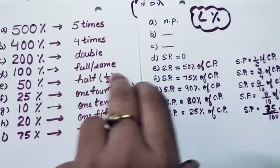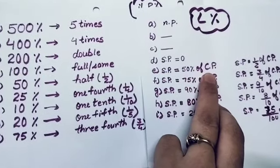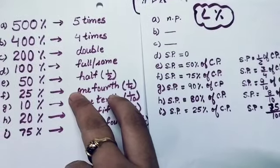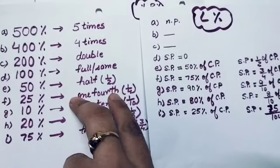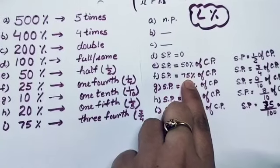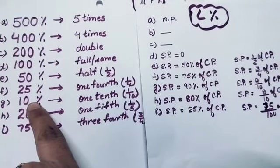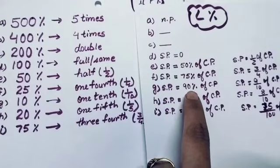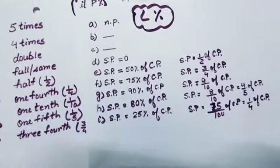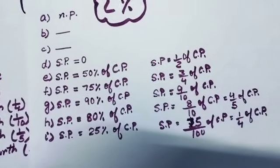If you have a 50% loss, your selling price is only 50% of CP. If you have a 25% loss, you are not getting the full cost price back — you are getting 25% less — that's why selling price is 75% of CP. If there is 10% loss, then selling price is 90% of CP, and similarly all the others follow this pattern.